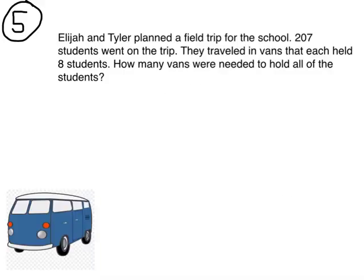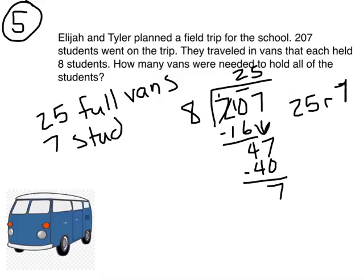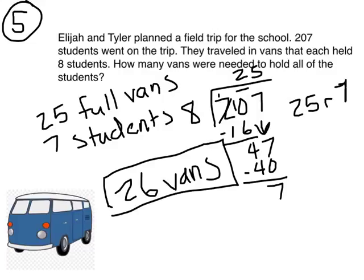Elijah and Tyler planned a field trip for the school. Two hundred seven students went on the trip. They traveled in vans that each held eight students. How many vans were needed to hold all of the students? Two hundred seven students were split across vans that held eight students each. Go ahead and solve that division problem now. The answer is twenty-five, remainder seven. So there were twenty-five full vans and seven students left over. Twenty-six vans were needed — twenty-five full vans plus one more van for the seven extra students.